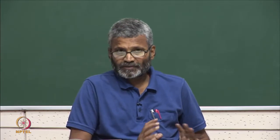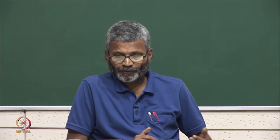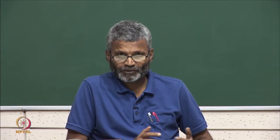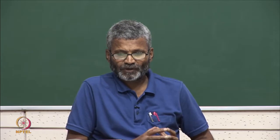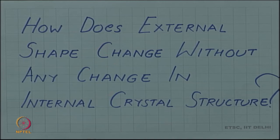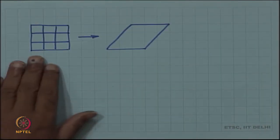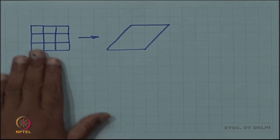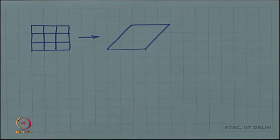In the last video we saw that crystal structure does not change during plastic deformation — this was derived by actual experimentation using X-ray diffraction. But then the question arises: how does external shape change without any change in crystal structure? Intuition tells us that if external shape is changing there should be some corresponding internal changes, but that internal change is not a change in crystal structure.